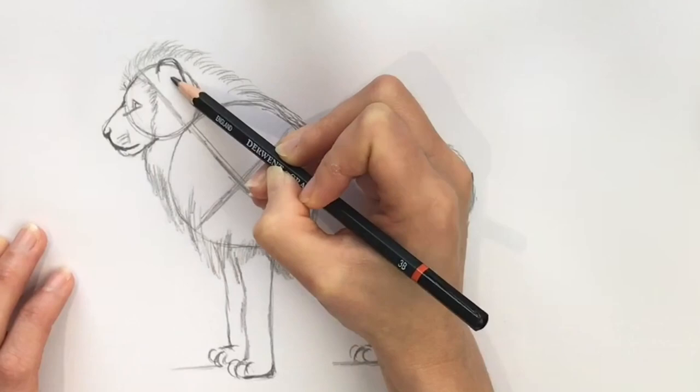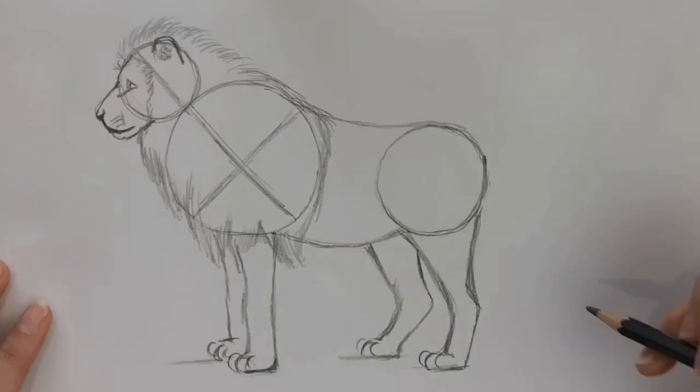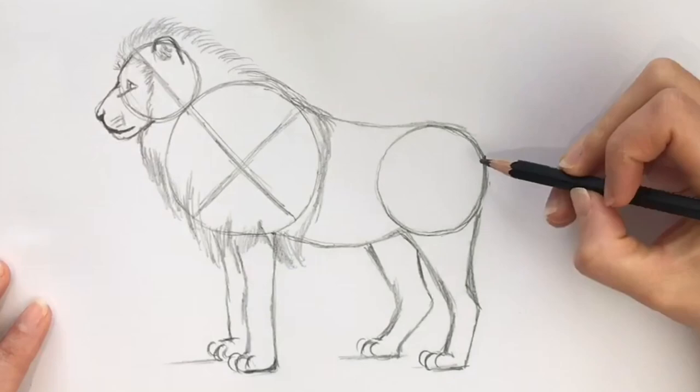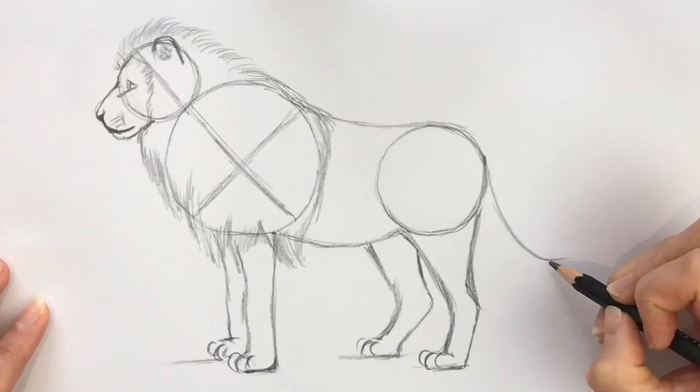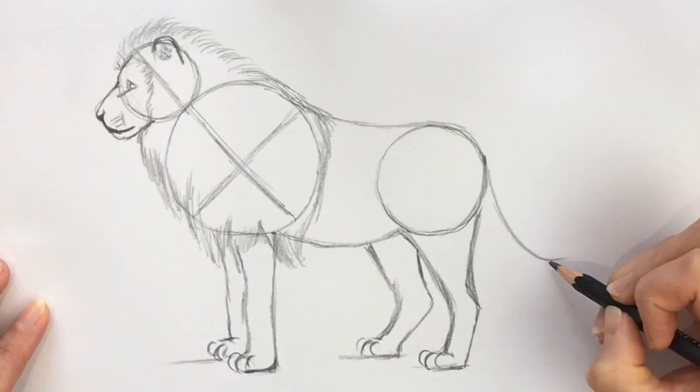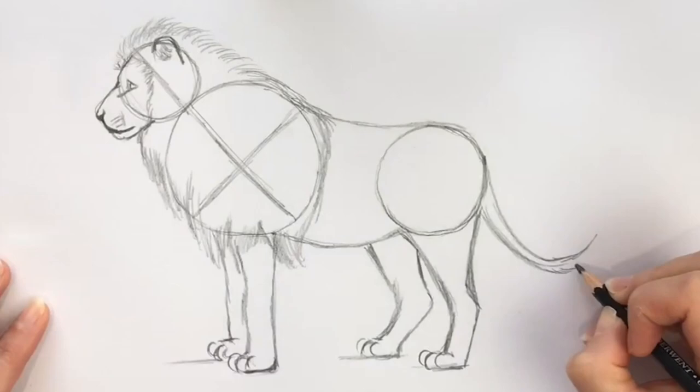Now we need to add a tail, and that's going to be the next bit. For the tail, start round about here, and just do a curved shape going all the way up. And then the other line, making it slightly thinner at the end. And then on the end, a furry bit.